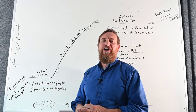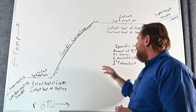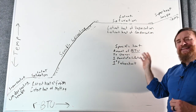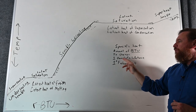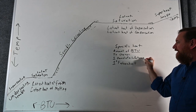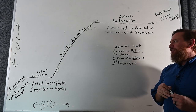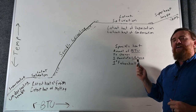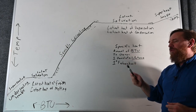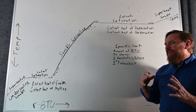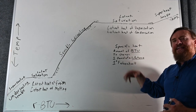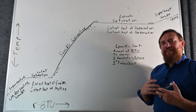Those terms we don't use very often. Another term we need to know is called specific heat. Specific heat is the amount of BTUs required to change one pound of a substance one degree Fahrenheit. The key differences are the substance and the BTUs. So the specific heat of water is one, because it takes one BTU to change one pound of water one degree Fahrenheit.